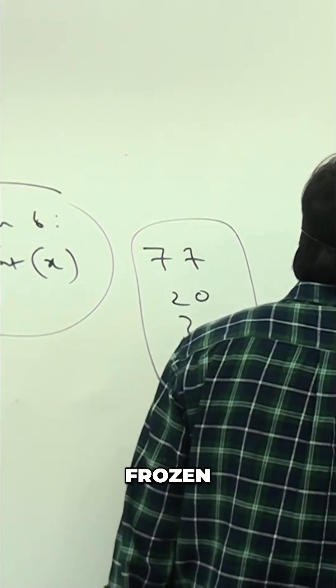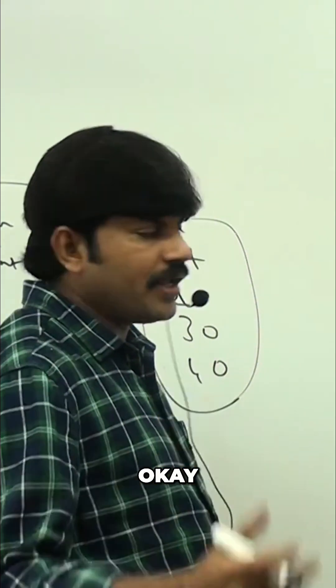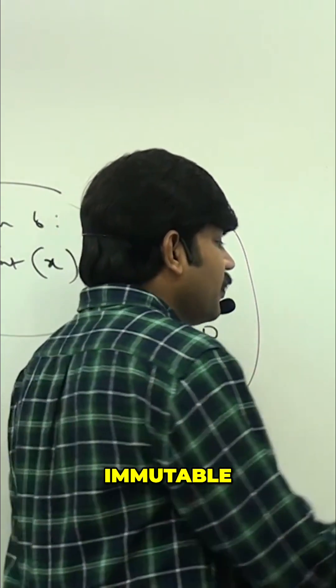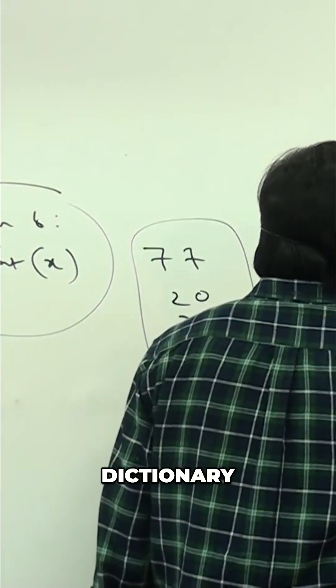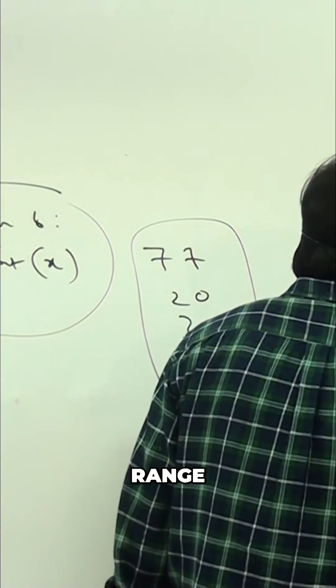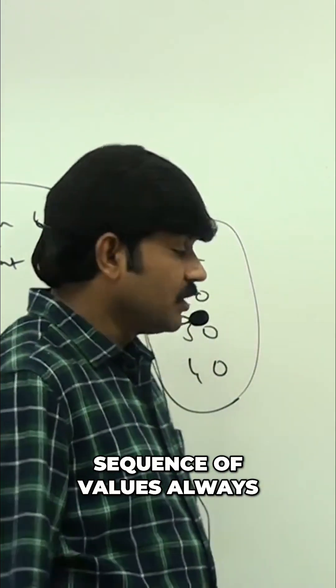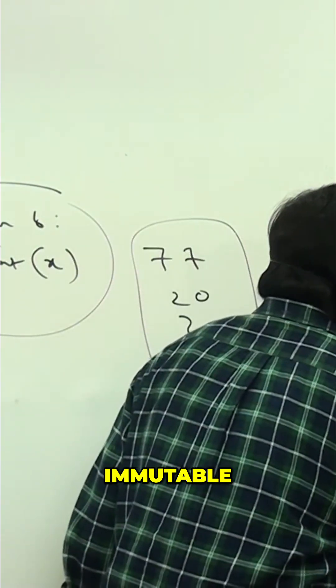The name itself indicates, right? Frozen - you can't change. Frozen set is immutable. Dictionary is mutable. Range is immutable - you can't change the content because it's a sequence of values. Bytes are immutable.